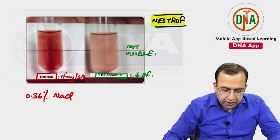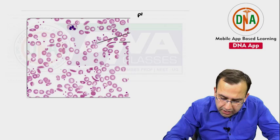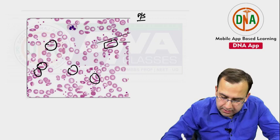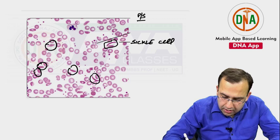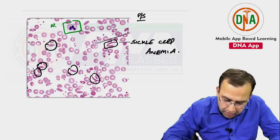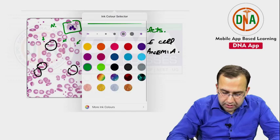Looking at this image — peripheral smear showing RBCs that are sickle-shaped. Also visible: a neutrophil and clusters of platelets. Diagnosis: sickle cell anemia.